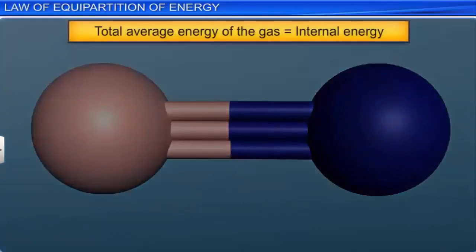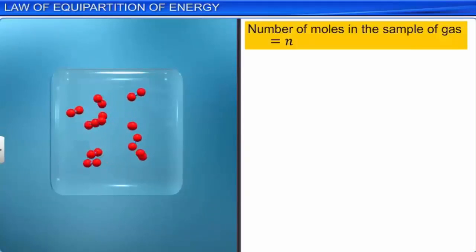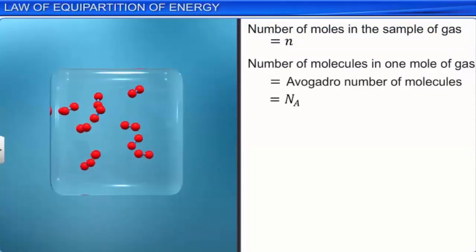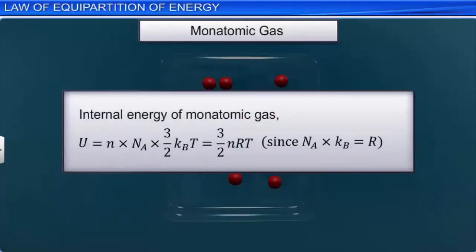The total average energy of a gas is called the internal energy of the gas. Consider that the sample contains n moles of gas. Each mole of gas has an Avogadro's number of molecules. The internal energy of n moles of a monoatomic gas, U, is equal to n·NA·(3/2)k_B·T. Since NA·k_B = R, we get U = (3/2)nRT.